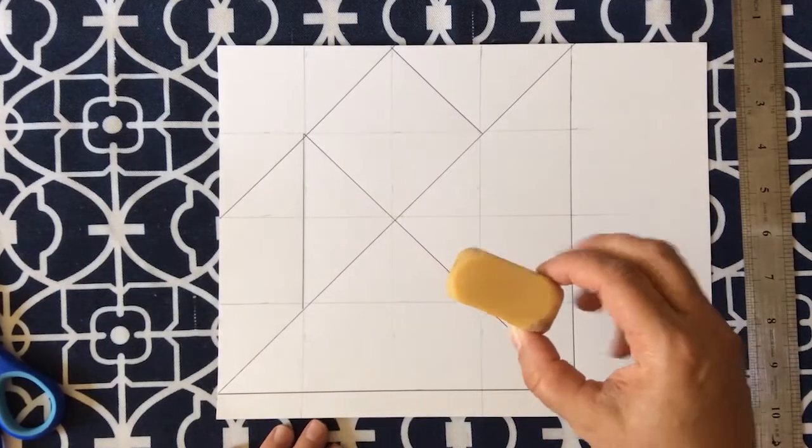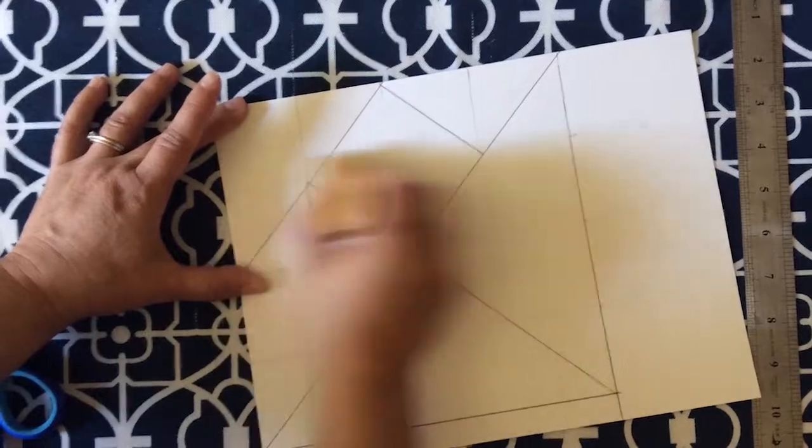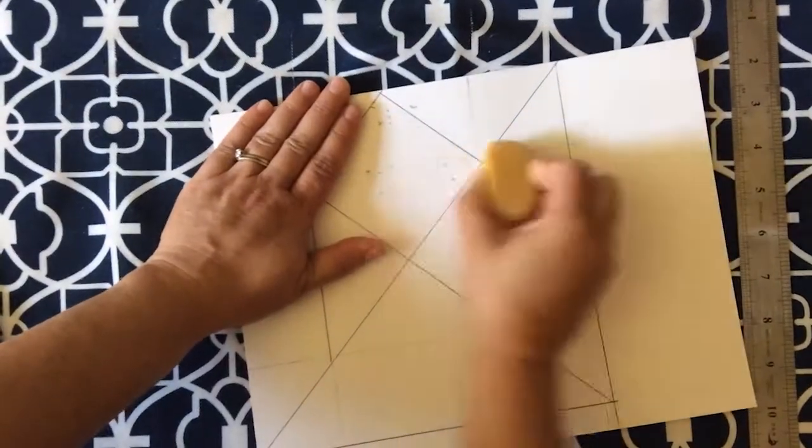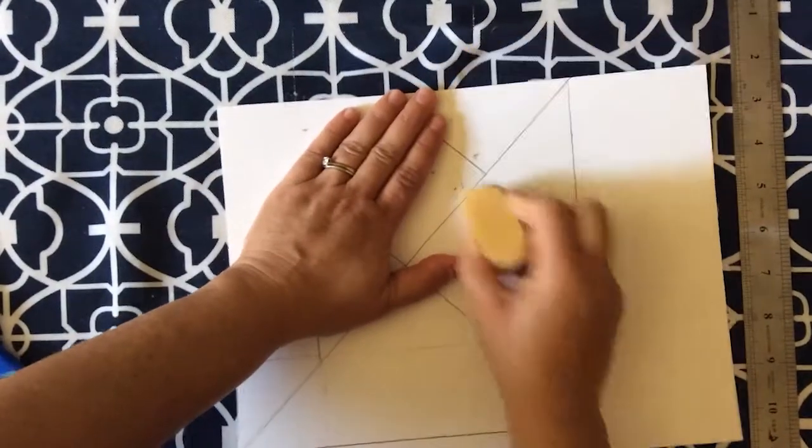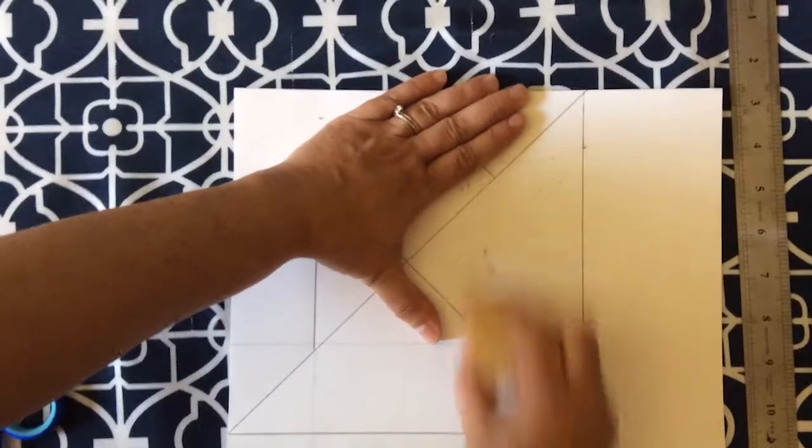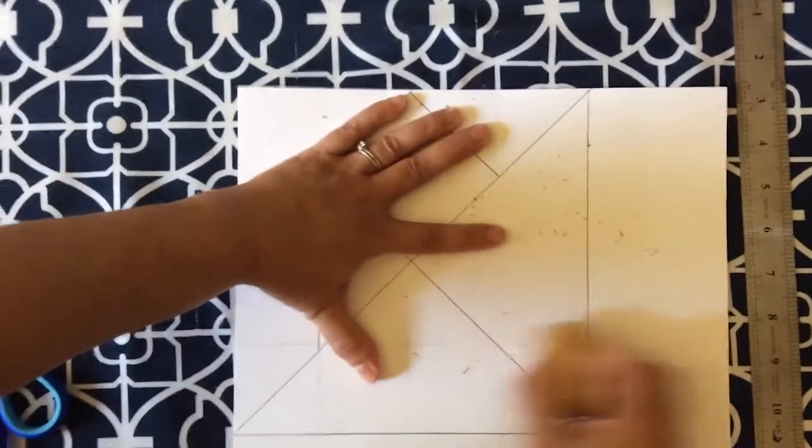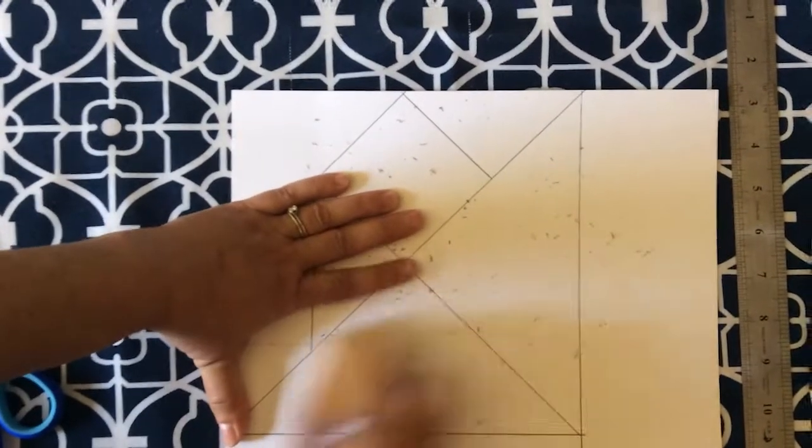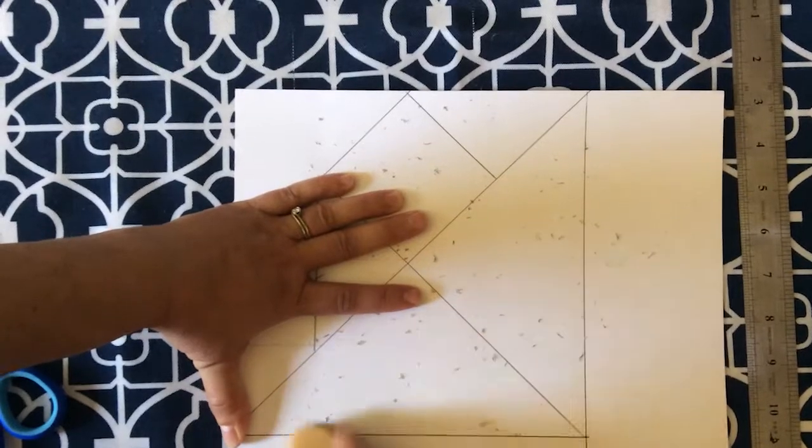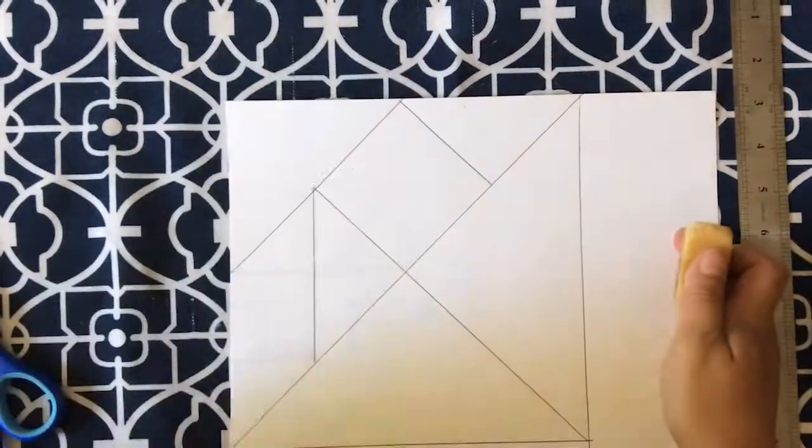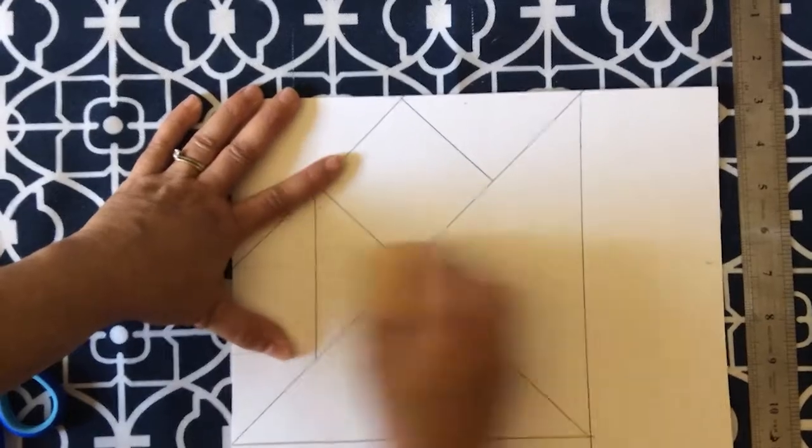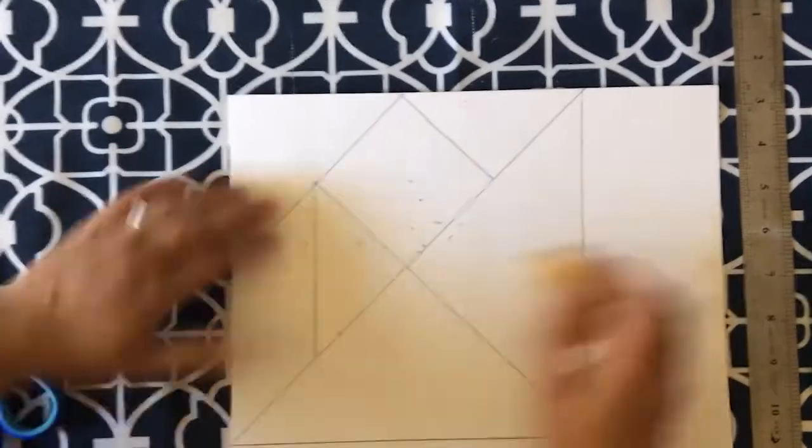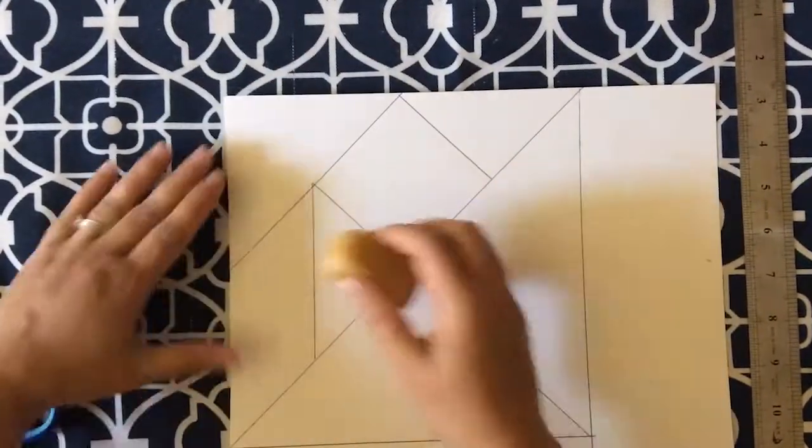Now use your eraser and let's erase the grid. I want to erase those lines just so that they don't show up in your tans after you've colored them. And it can be a little confusing when you're trying to cut to remember which lines you're supposed to cut along. I made that mistake the very first time. I did not erase them and I cut along the wrong line. So I just want to erase them.